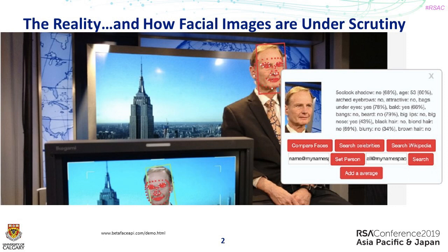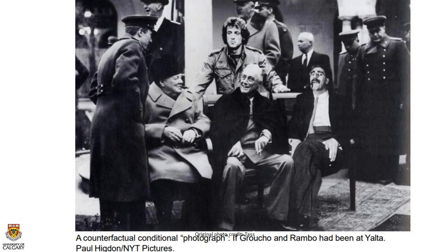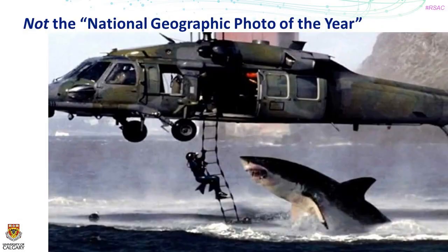Images are going to become very, very important in our lives, and they can also be very easily manipulated. This is a historical photograph of the Yalta Summit, and you'll notice that there are some characters in there who don't belong: Sylvester Stallone and Groucho Marx. This is an old Photoshop trick done a long time ago. More recently, some people thought this should be the National Geographic photo of last year because it's so impressive — of course, the shark is not actually attacking the diver. It's a composite of two photographs.